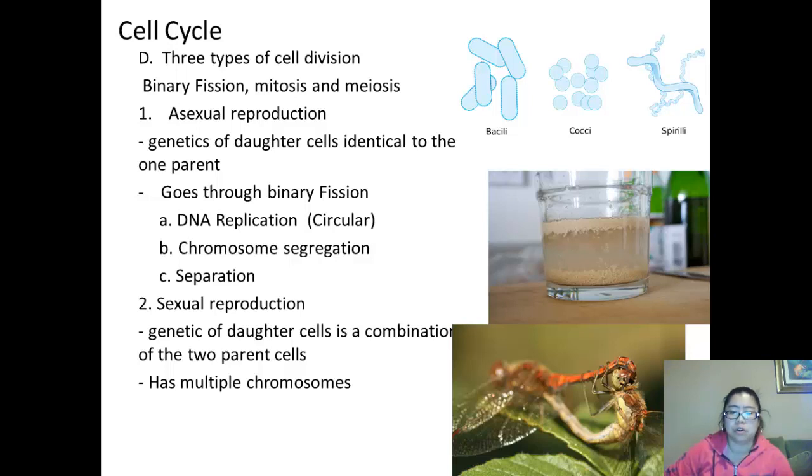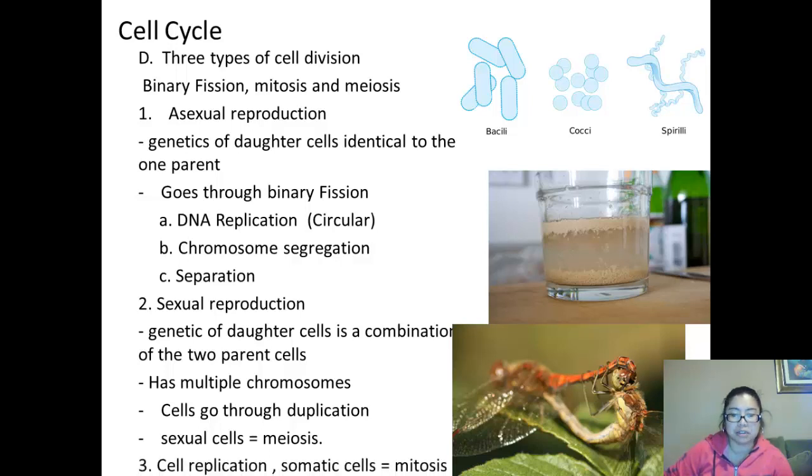The cells will go through duplication, and that is a process which happens in sexual cells of meiosis. Now, the third type of cell division we're going to talk about in the next series is mitosis. That is cell replication that happens in somatic cells, basically non-sexual cells, and that goes through mitosis.